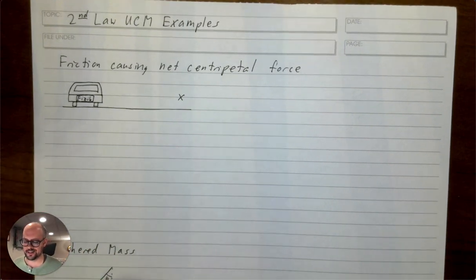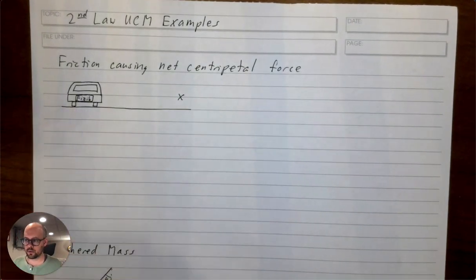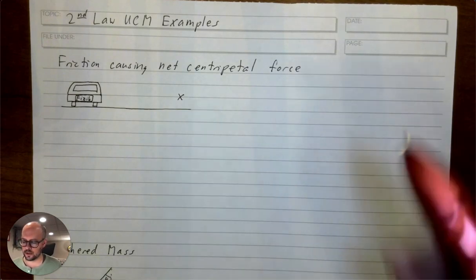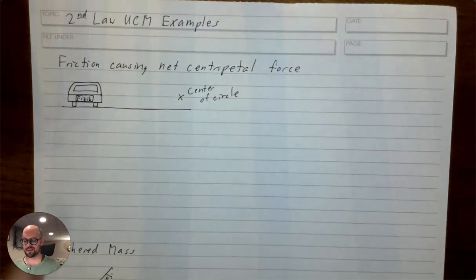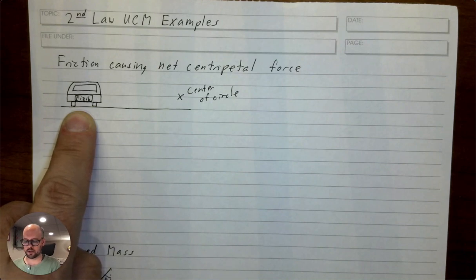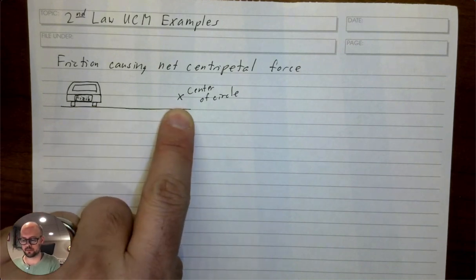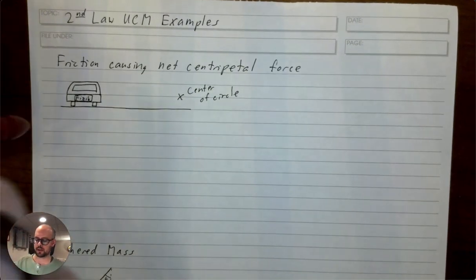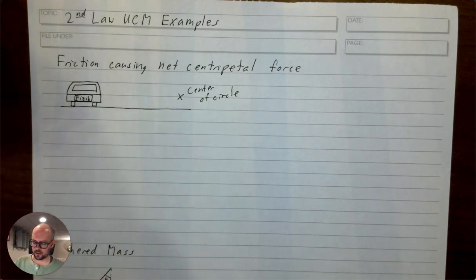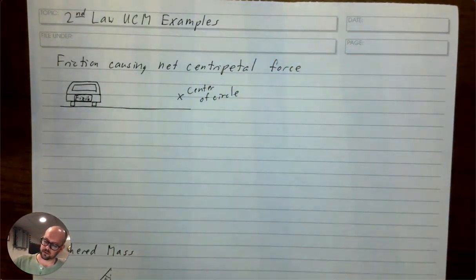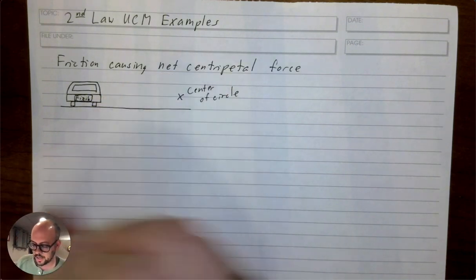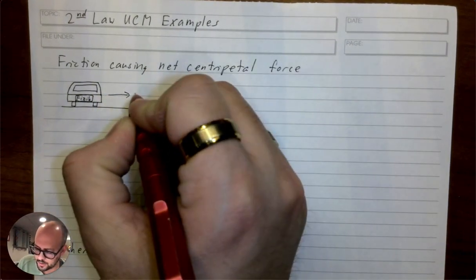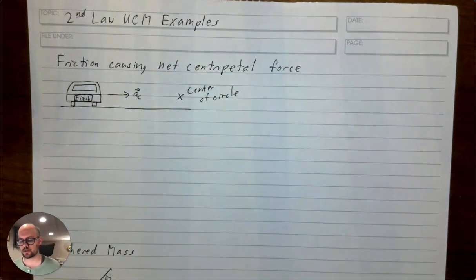What you need to imagine is that this car — I drew the license plate — is going into the page. The X marks the center of the circle. The car is taking a right-hand turn and staying the same distance from that point in space, driving in a circle as if it's in a rotary in England. The car needs to accelerate toward the center, so it's a centripetal acceleration.